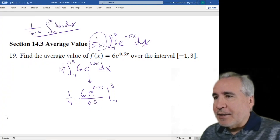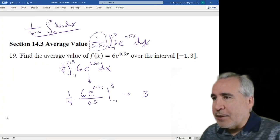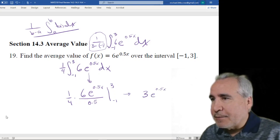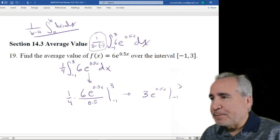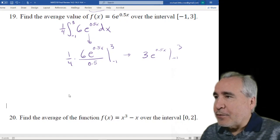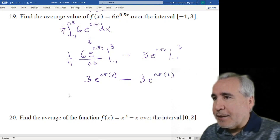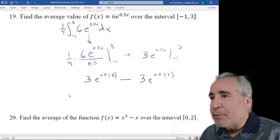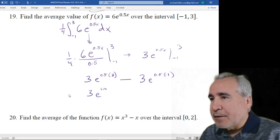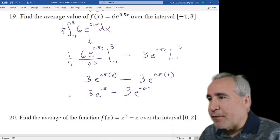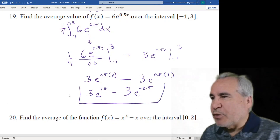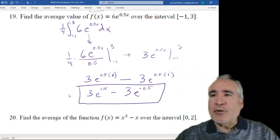Okay, so this all up front really just becomes 3E to the 0.5x, going from negative 1 to 3, and then we just plug in our limit. So the 3 goes in first, 3E to the 0.5 times 3 minus 3E to the 0.5 times negative 1. 3 times 0.5 is going to be 1.5. And negative 1 times 0.5 is simply negative 0.5. So again, on multiple choice, you would see an answer like this probably rather than a numerical answer.